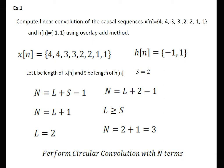Now let us see the first problem on overlap add. The given sequence x of n is the input signal and impulse response is denoted by h of n. x of n is 4, 4, 3, 3, 2, 2, 1, 1 — that is having the length of 8 — and h of n having the length of 2. We make the assumption that x of n is large enough. Let L be the length of x of n and S be the length of h of n. S is equal to 2.